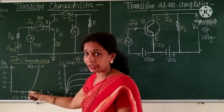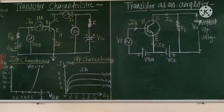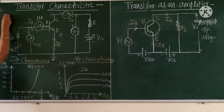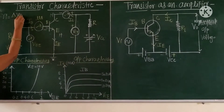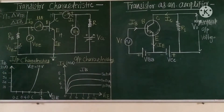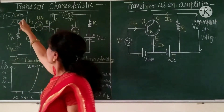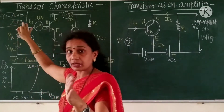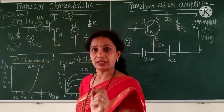First the current is very low, then it increases. The input dynamic resistance is denoted by RI. RI, the input dynamic resistance, is the ratio of ΔVBE to ΔIB — that is, change in base emitter voltage to the change in base current. That factor is nothing but resistance, and this resistance is the input dynamic resistance.